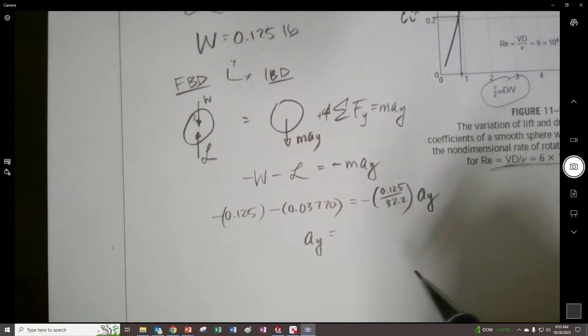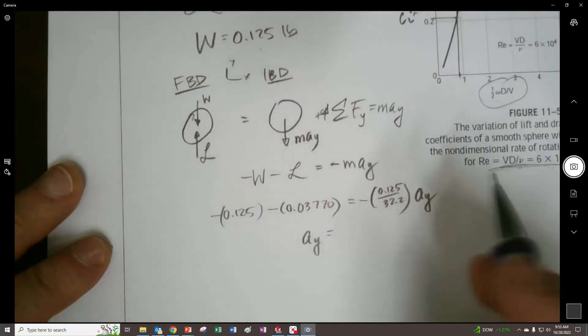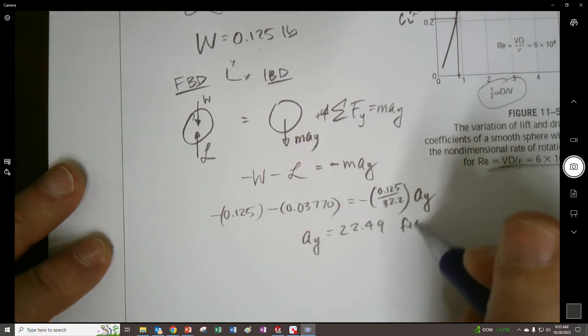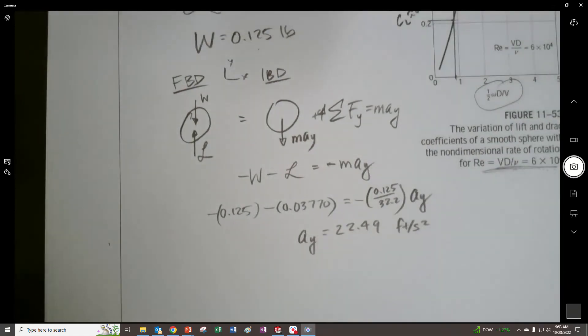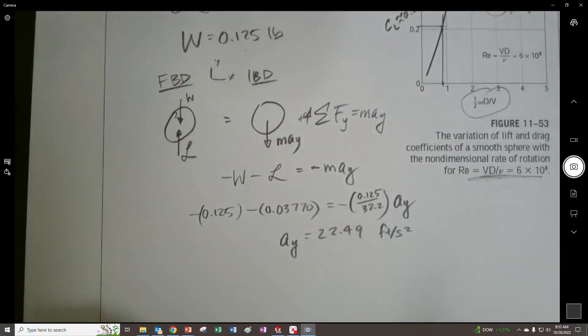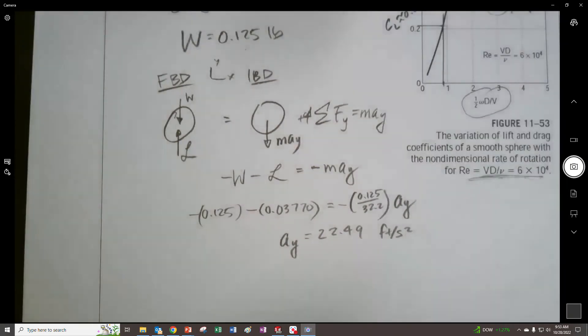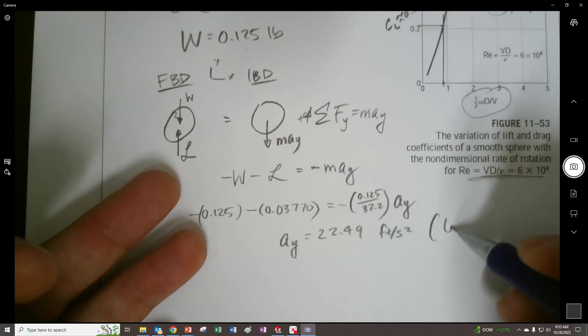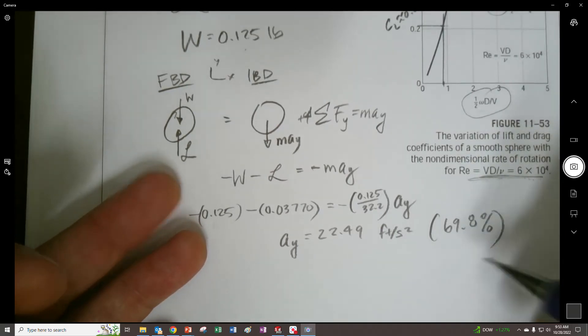This will help us quantify what the effect of the lift is going to be. When we get done with this, we're going to find that it's 22.49 feet per second squared. It's going to continue to go downwards, but the gravity is now reduced. The acceleration that would otherwise be there, this would have been 32.2, but now the new downward acceleration is actually like 69.8% of regular gravity.